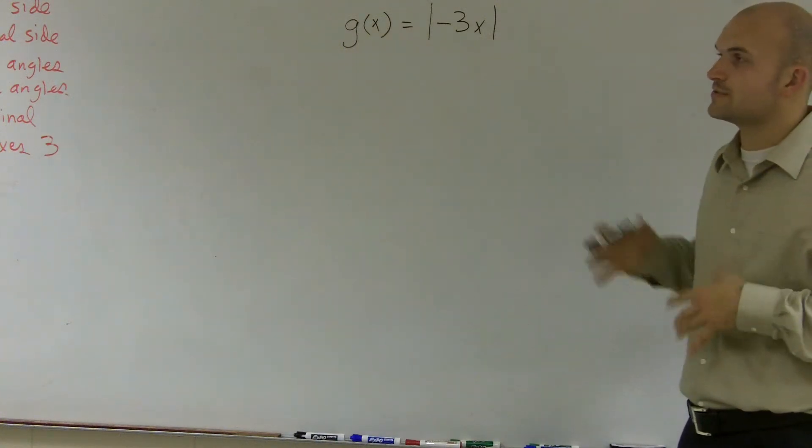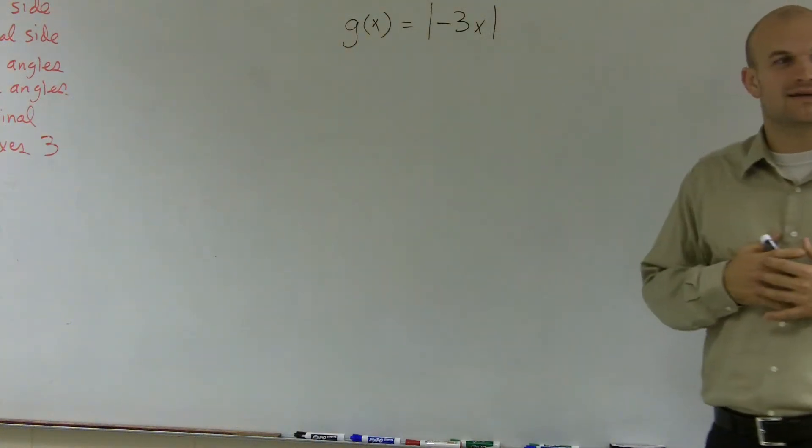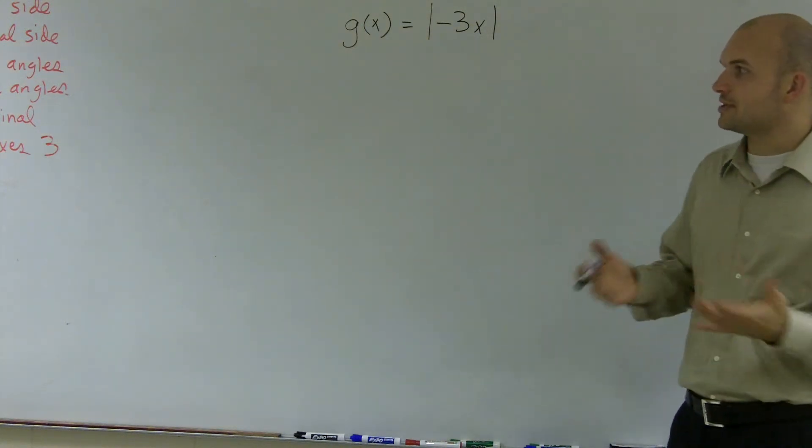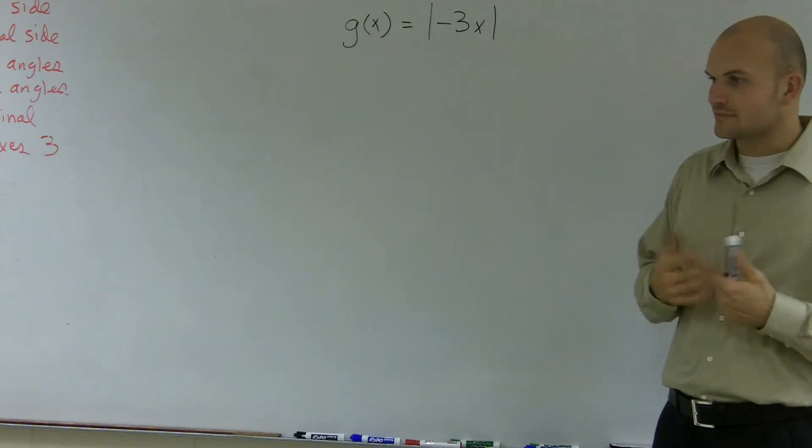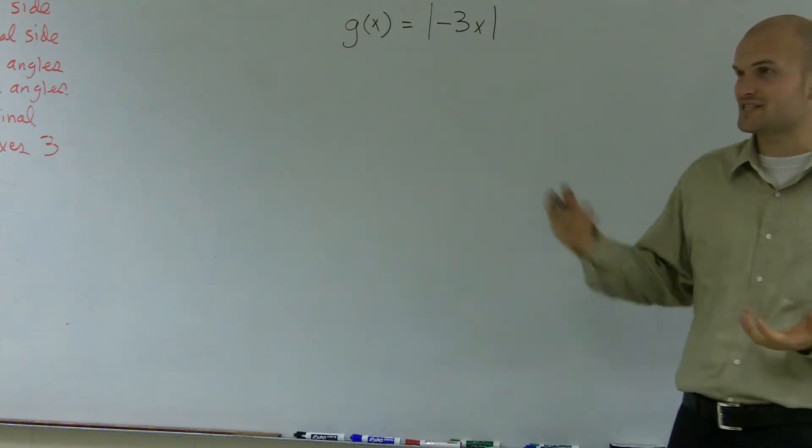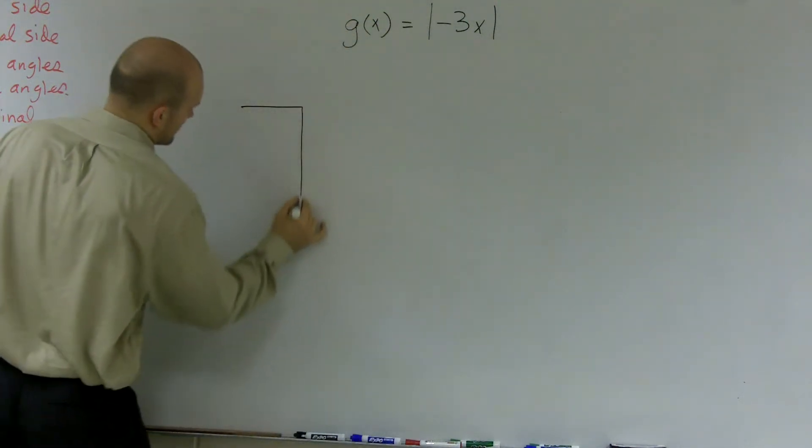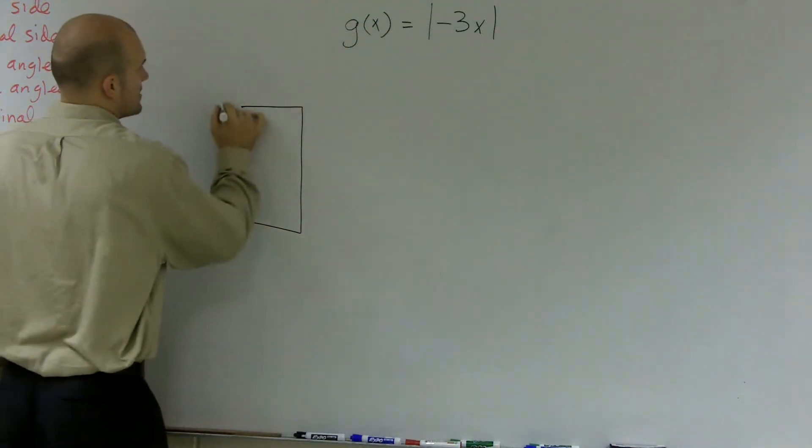So first thing I want to do, whenever you're graphing, it's always easiest to make a table of values. Now there's a couple ways we could do this, but I always think graphing table values, especially with absolute value functions, is very simple.